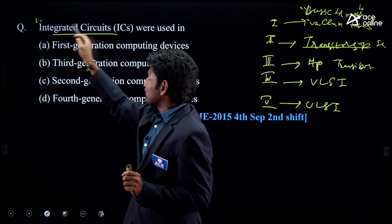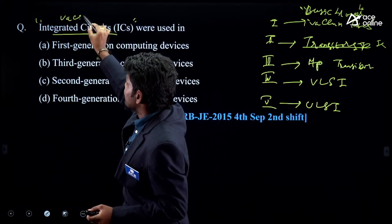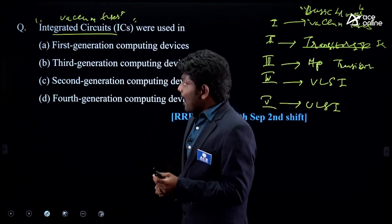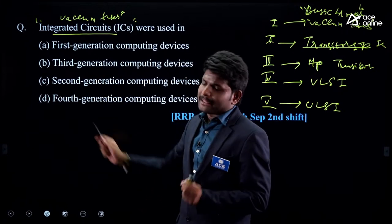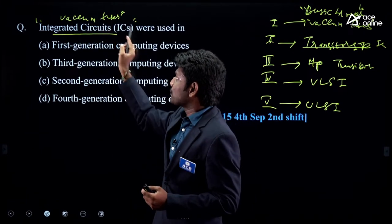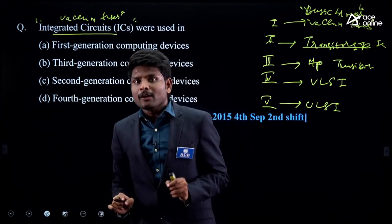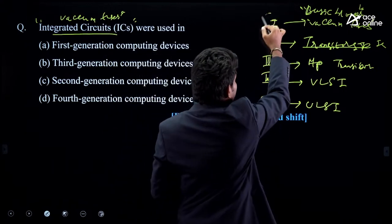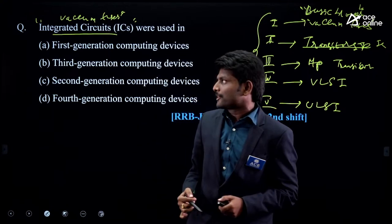They asked about integrated circuits this year, so next year they may ask the same question by replacing integrated circuits with vacuum tubes. As a student, what you need to learn is: they are asking about basic blocks of a particular generation. From each generation, I need to understand what the basic blocks are. This is what you need to understand.